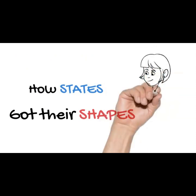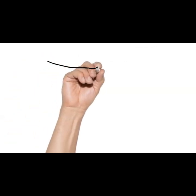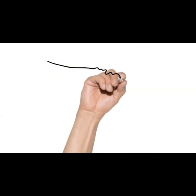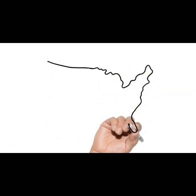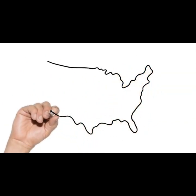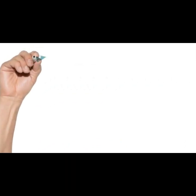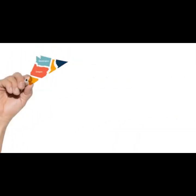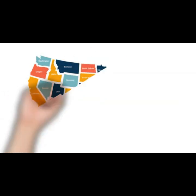Today we're asking the question: how do states get their shapes? The United States took a really long time getting its shape, and that involved a lot of different things like wars, land disputes, treaties, and even real estate deals. The same thing happened with each state — every state has a unique story for how it got its shape.